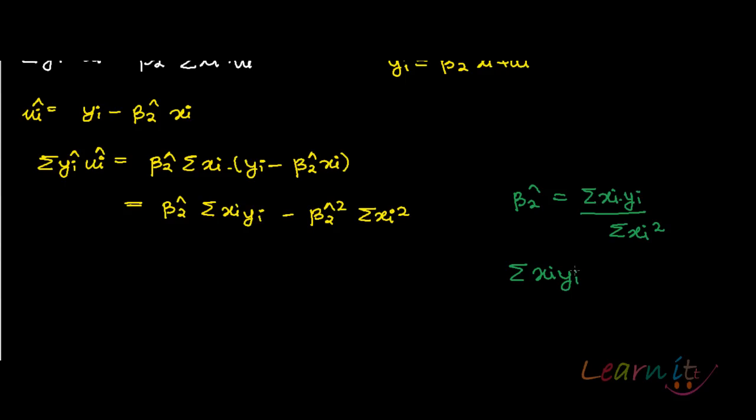Summation xi yi can be written as beta 2 hat summation xi square. So this becomes beta 2 hat into beta 2 hat summation xi square minus beta 2 hat summation xi square.